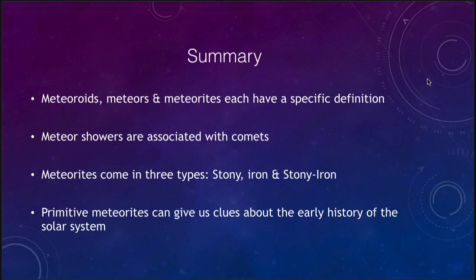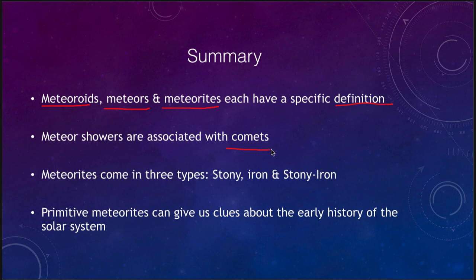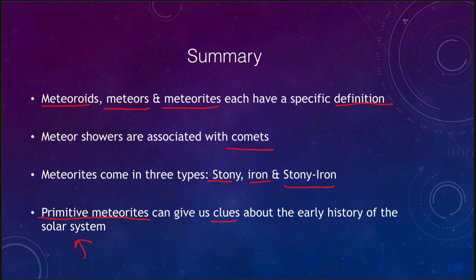To summarize: we have three different types of objects — meteoroids, meteors, and meteorites — each with a very specific definition. Meteor showers are associated with comets. There are three types of meteorites: stony, iron, and stony-iron. And finally, primitive meteorites are ones we especially like to study because they give us clues about the early history of the solar system. That concludes our lecture on meteors and meteorites. We'll be back next time for another topic in astronomy — have a great day everyone, and I will see you in class.